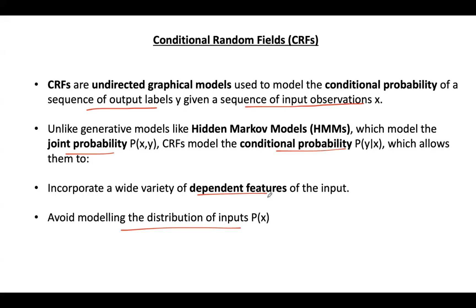We use CRFs because they consider the entire input sequence when predicting each label. Unlike hidden Markov models, CRFs do not assume independence between the observed inputs. Additionally, conditional random fields avoid the label bias problem, which is a problem in maximum entropy Markov models.